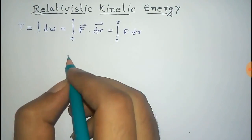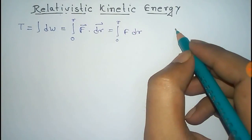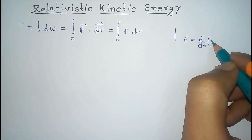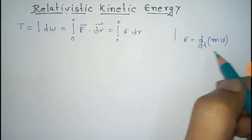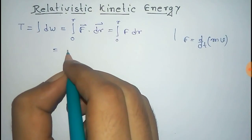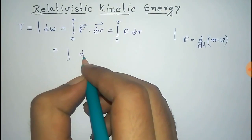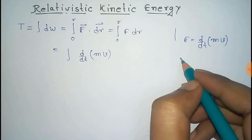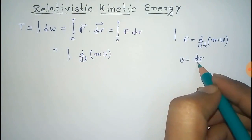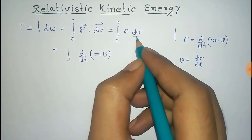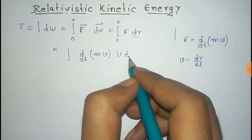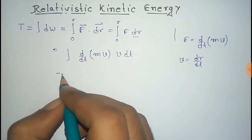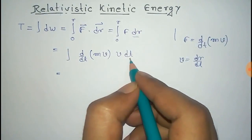Now this force can be written as the derivative of momentum — that is d/dt of MC. So we replace it as d/dt of MV, and dr can be written as V dt. So we replace dr with V dt, and now the limit goes from 0 to T because of the dt.